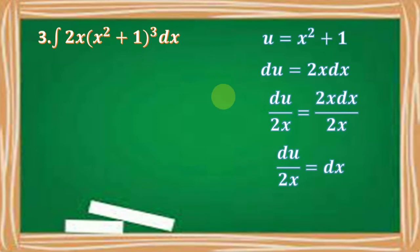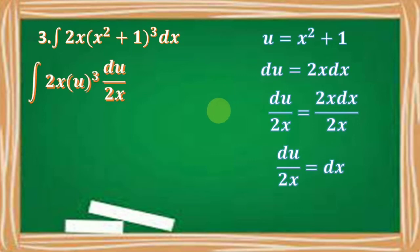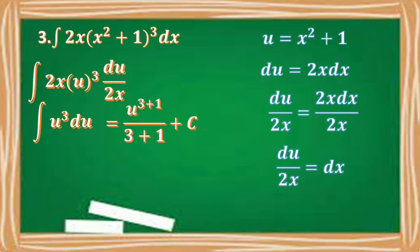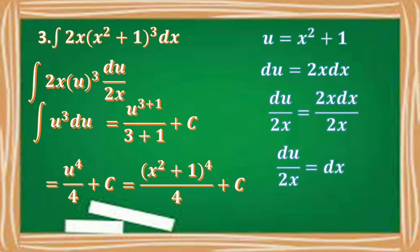Substituting u for x squared plus 1 and du over 2x for dx, we have the integral of 2x times u cubed times du over 2x. Canceling out 2x, we have the integral of u cubed du. Applying the anti-differentiation rule, we have u raised to 3 plus 1 over 3 plus 1 plus c, giving us u to the 4th over 4 plus c. Substituting back, we have the quantity x squared plus 1 raised to the 4th all over 4 plus c.